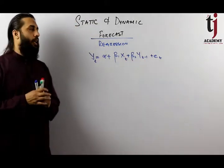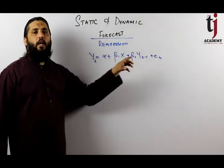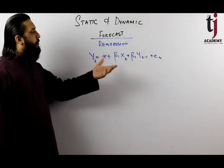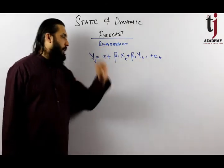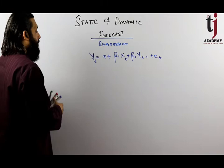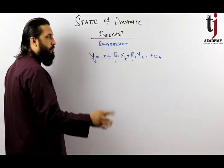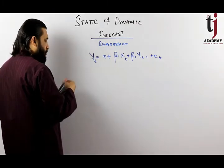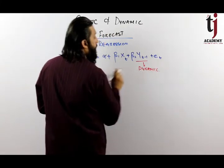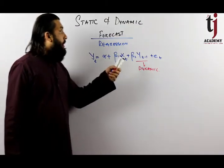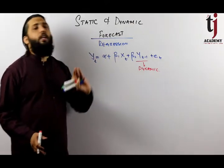If you have this model, you can see it contains an auto-regressive term. This model is not just auto-regressive because it includes the dependent variable's lag — y(t-1). This is the auto-regressive term; it is dependent on the lagged value of y.